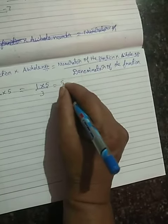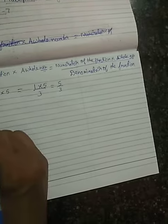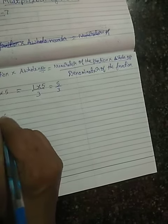1 × 5 = 5, then by 3. That's the first one. Second example: 7/8 × 10.